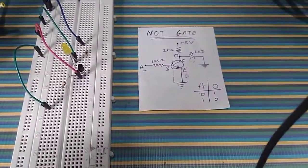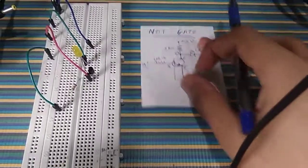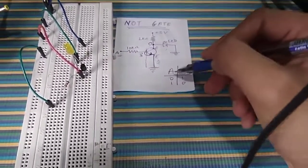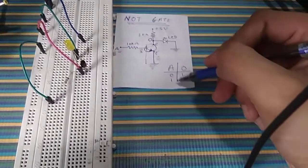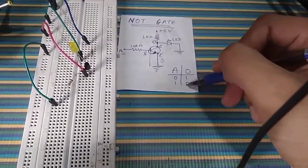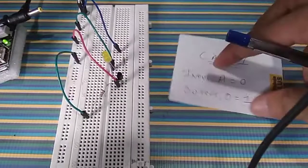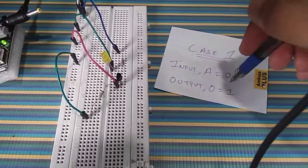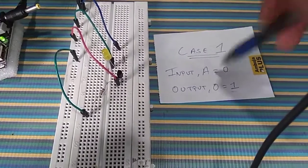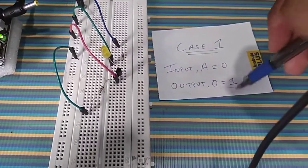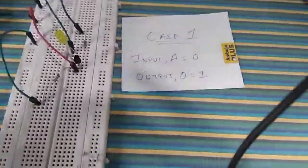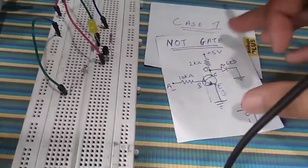This is the circuit for building a NOT gate using an NPN transistor. With an NPN transistor we have two cases: first, when input is zero, the output will be high; and second, when input is high, the output is zero. So for the first case, when input A equals zero, the output should be one — that is high — and the LED should be glowing.